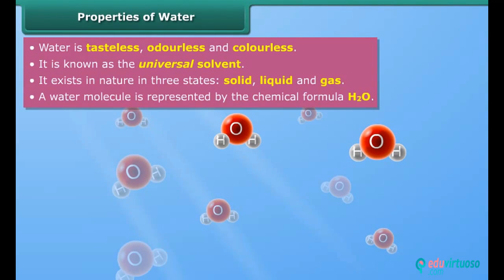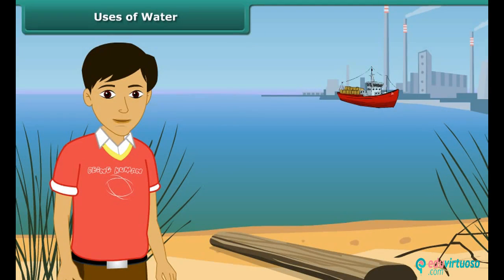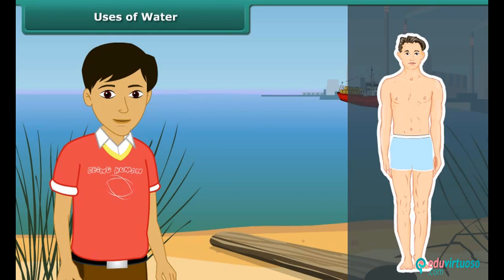A water molecule is made up of two hydrogen atoms and one oxygen atom. That is why water is represented by the chemical formula H2O. We use water for various different purposes. On average, a human being uses a significant amount of water each day.